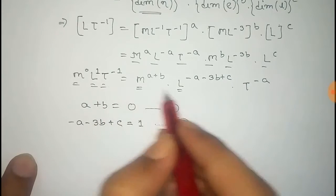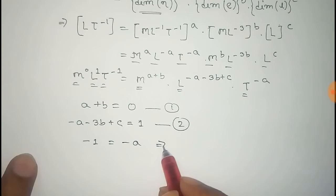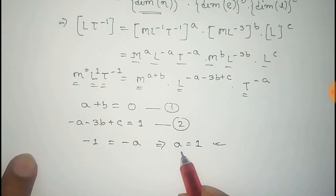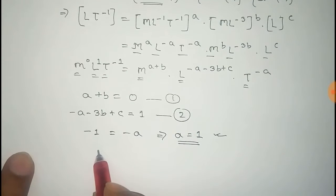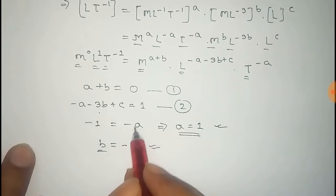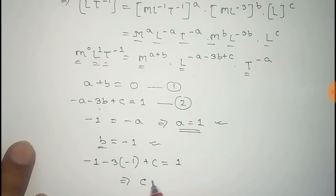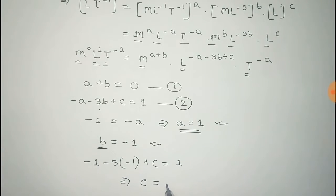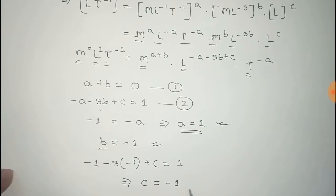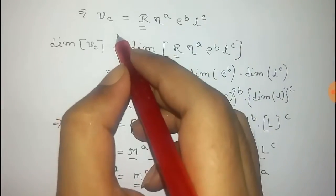Comparing the power of T, we get minus 1 equals minus a, so a equals 1. Putting the value of a equal to 1 in equation number 1, we get b equals minus 1. Now we have the values of a and b, and we can find c from equation number 2: minus a minus 3 times b plus c equals 1, giving c equals minus 1. So we have a equals 1, b equals minus 1, and c equals minus 1.